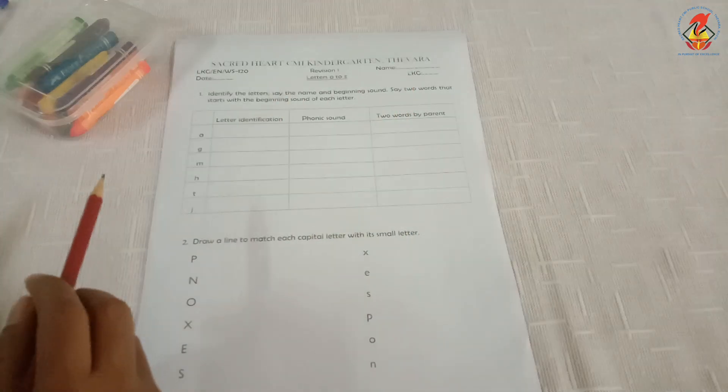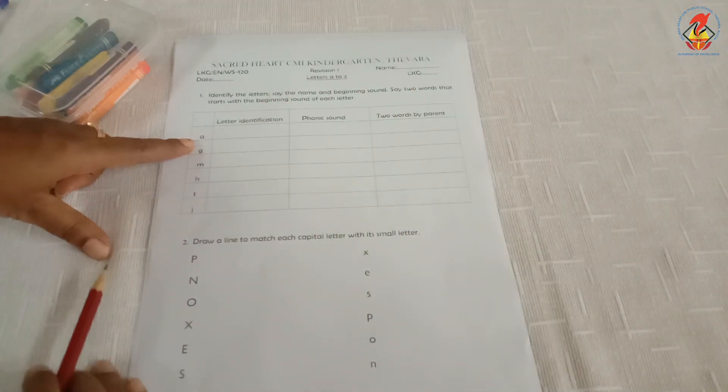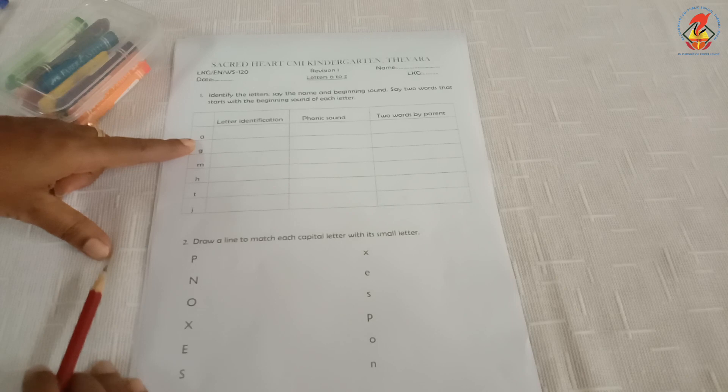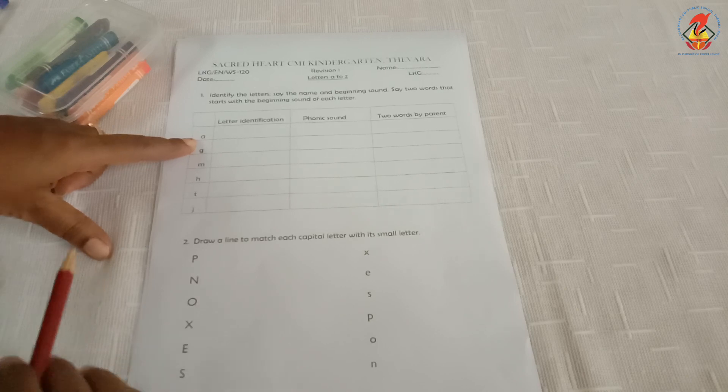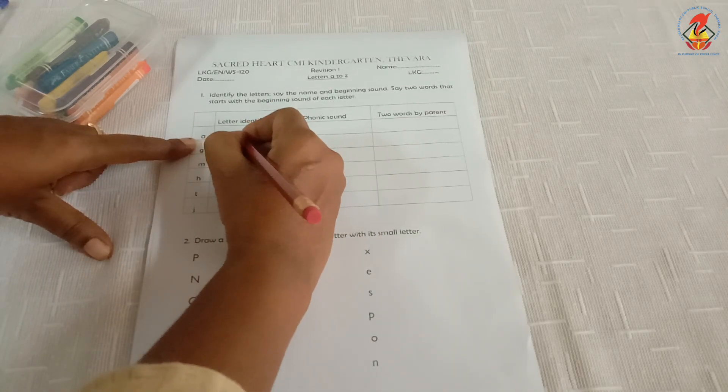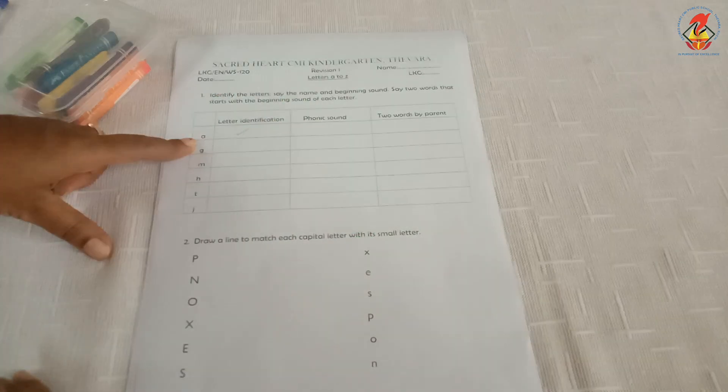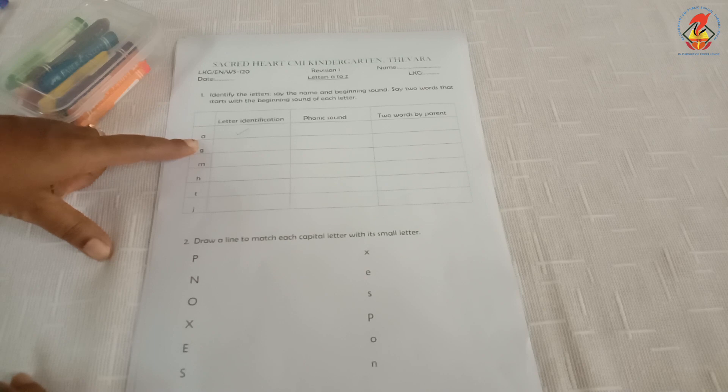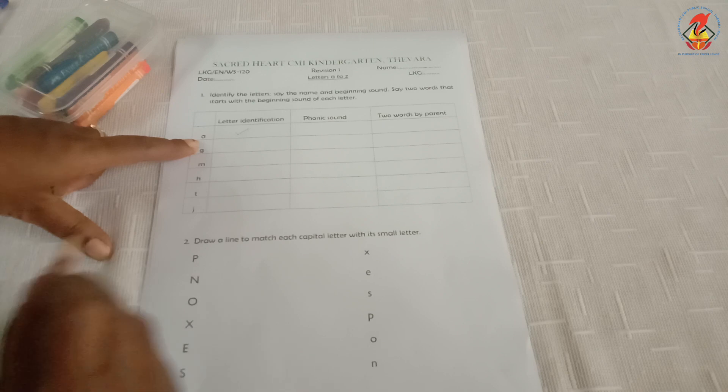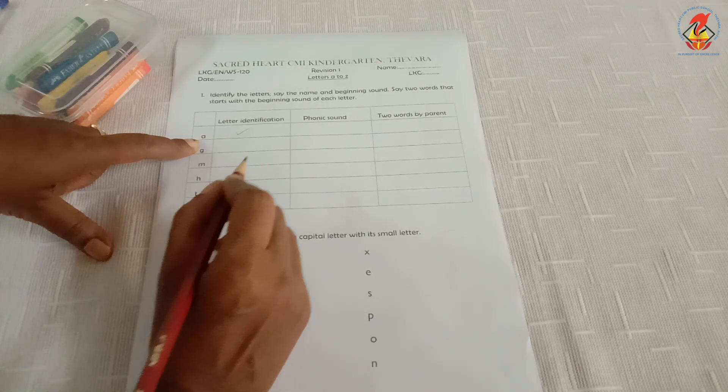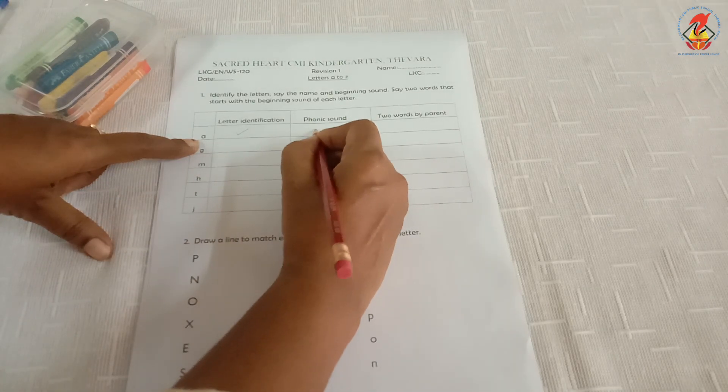For example, children, which letter is this? This is letter A. So parents, put a tick mark here. Then, children, what is the sound of letter A? Letter A sounds A. If the child says correct answer, put a tick here.